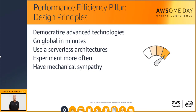Design principles that can help you achieve performance efficiency include democratizing advanced technologies — technologies that are difficult to implement can become simpler to consume by pushing that knowledge and complexity into the cloud vendor's domain. Instead of having your IT team learn how to host and run a new technology, they can consume it as a service. Going global in minutes: with AWS, you can easily deploy your systems in multiple regions around the world, providing lower latency and a better experience for your customers at minimal cost. Use a serverless architecture — in the cloud, you remove the need to run and maintain traditional servers for compute activities, which also removes the operational burden and can lower transactional costs.